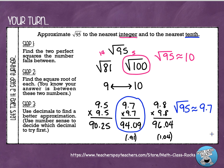That is how you approximate non-perfect squares to the nearest integer and to the nearest tenth. If you need to go back and watch the examples again, I'd certainly recommend that. If you're still feeling a little confused, reach out to a classmate, and of course you can always ask your teacher — we love to help you, that's what we're here for. Until next time, bye.